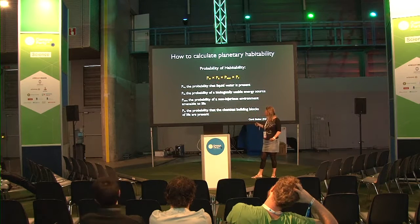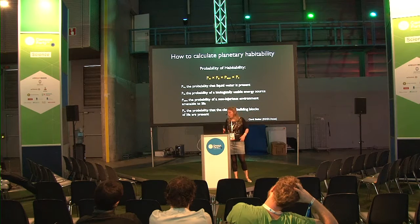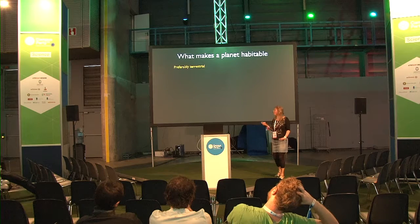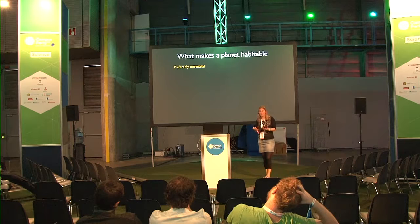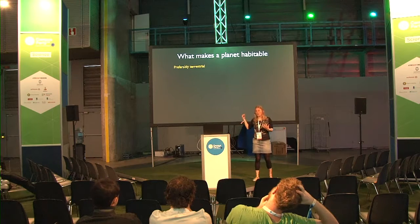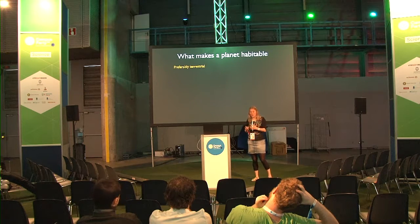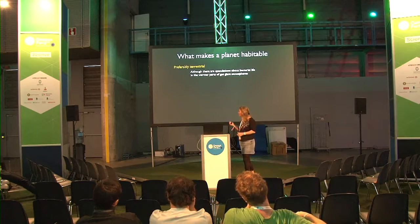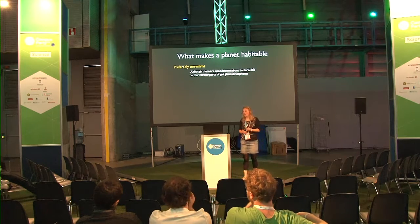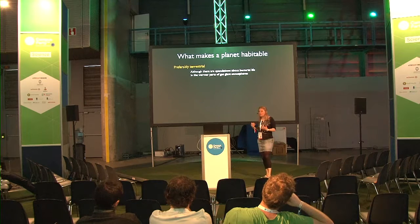Using that probability equation, you can get an idea of the probability for a planet or a moon. Then the next question is: what makes a planet habitable? First, terrestrial planets seem to be a good fit, because the minerals on the surface of Earth can serve as catalysts for those building blocks to react into bigger components and start forming first cells. There are also speculations that bacterial life could live in warmer parts of a gas giant atmosphere, but so far it's very difficult to think of something that would actually work.